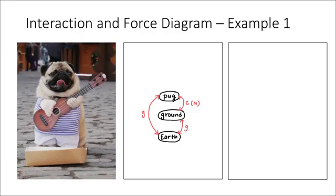I'll label that C for contact because the ground and pug are in contact. In this case, we have a specific type of contact force — what we call a normal force. A normal force is a force that exists between a surface and an object, so in this case, the pug and the ground. Let's take a look at another example.